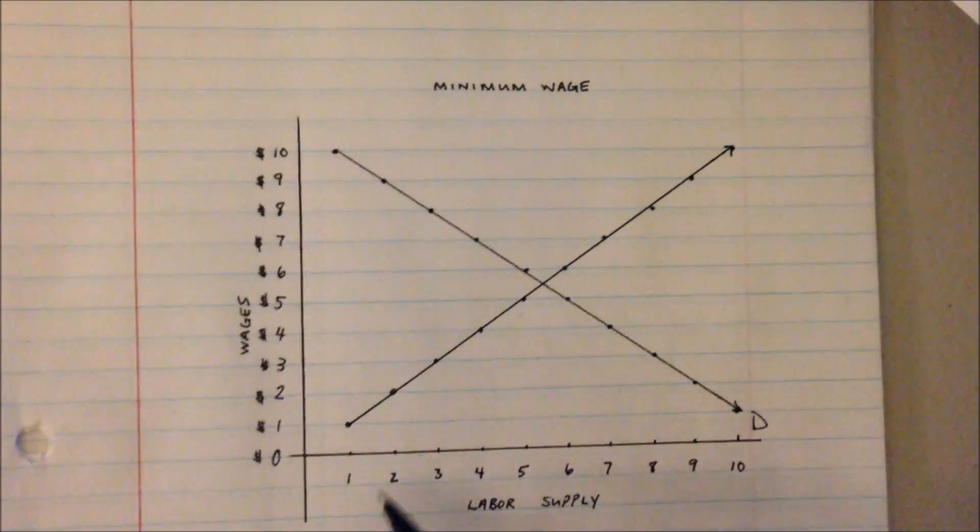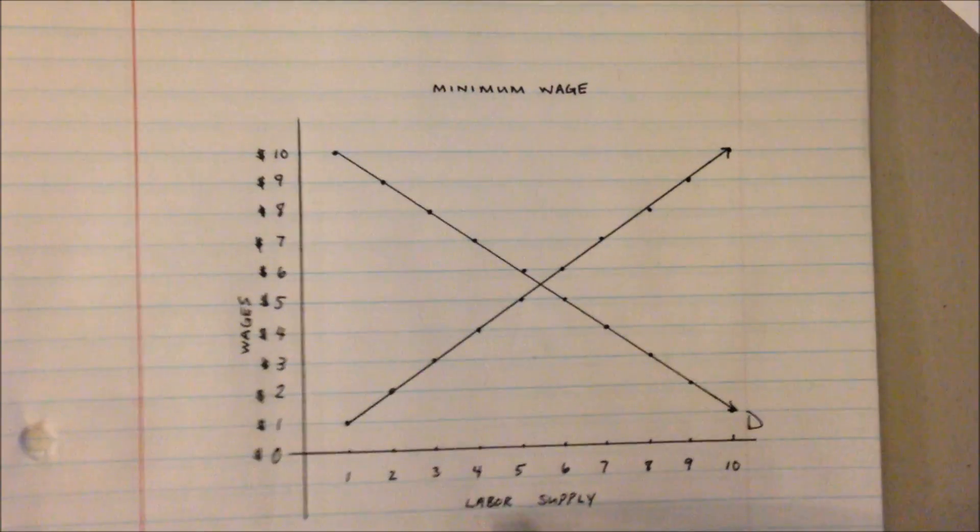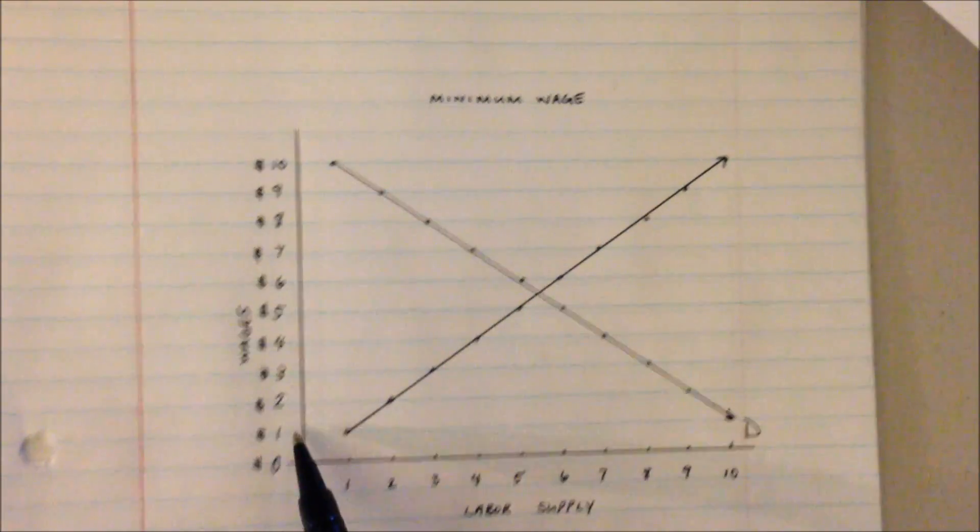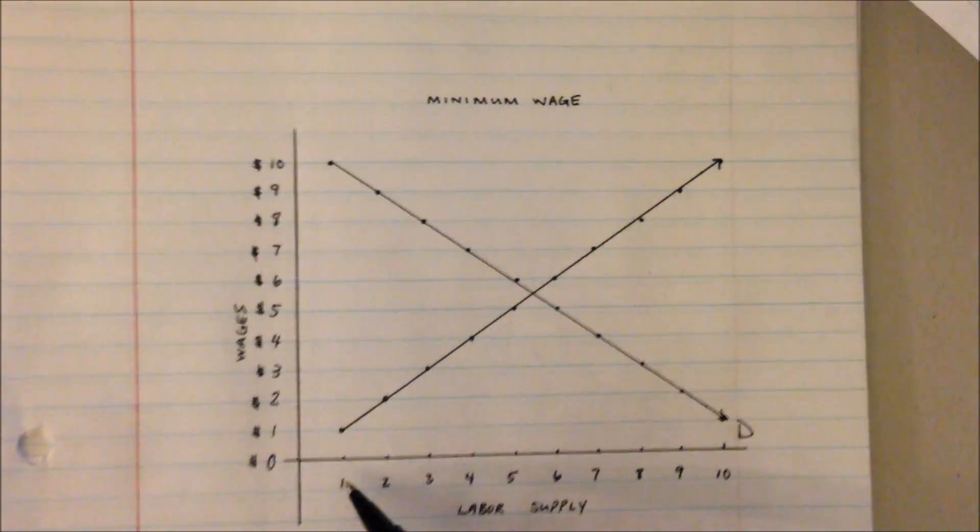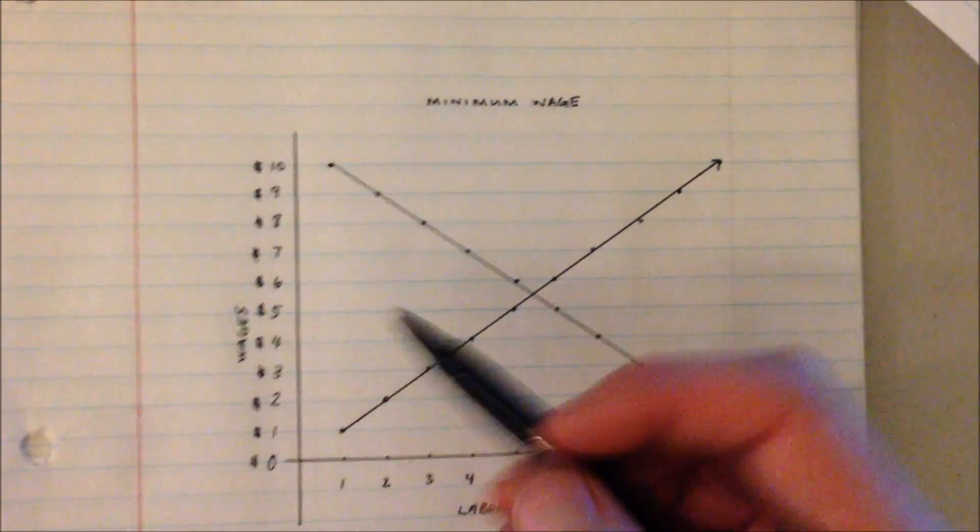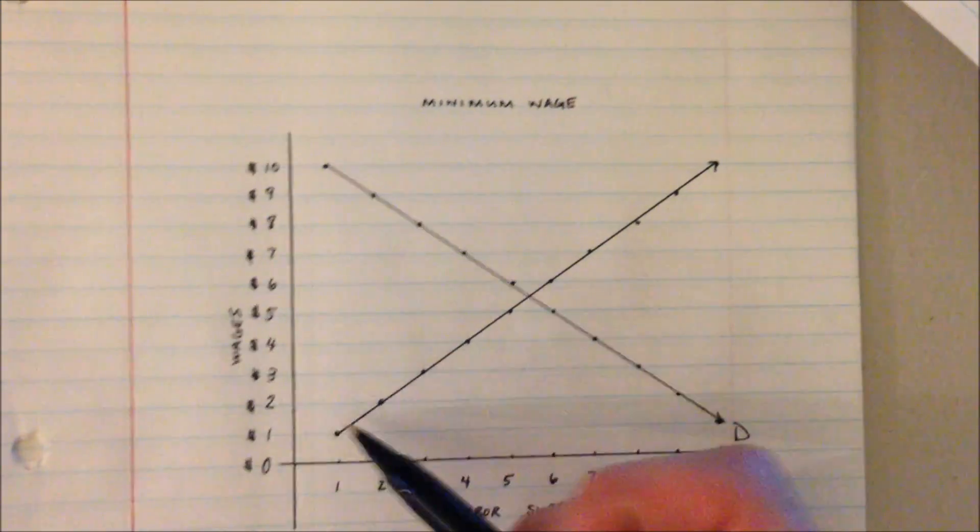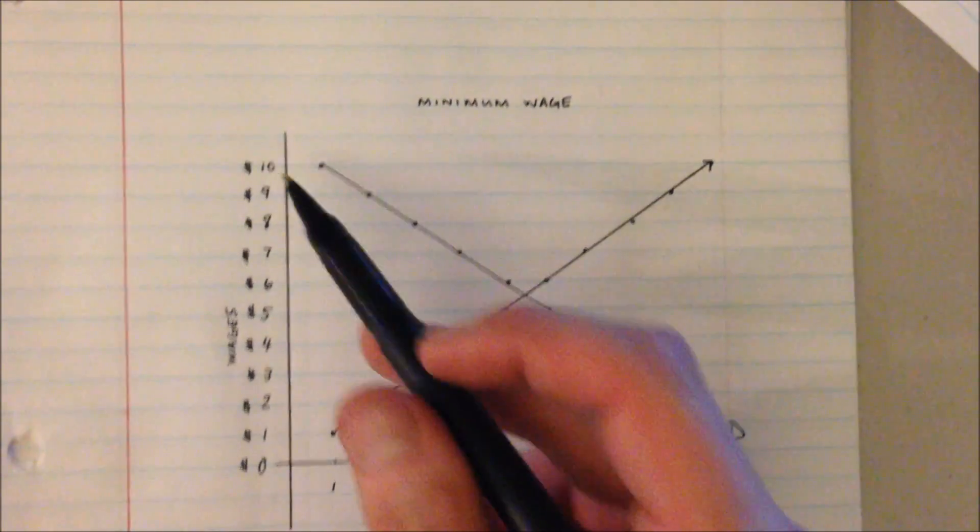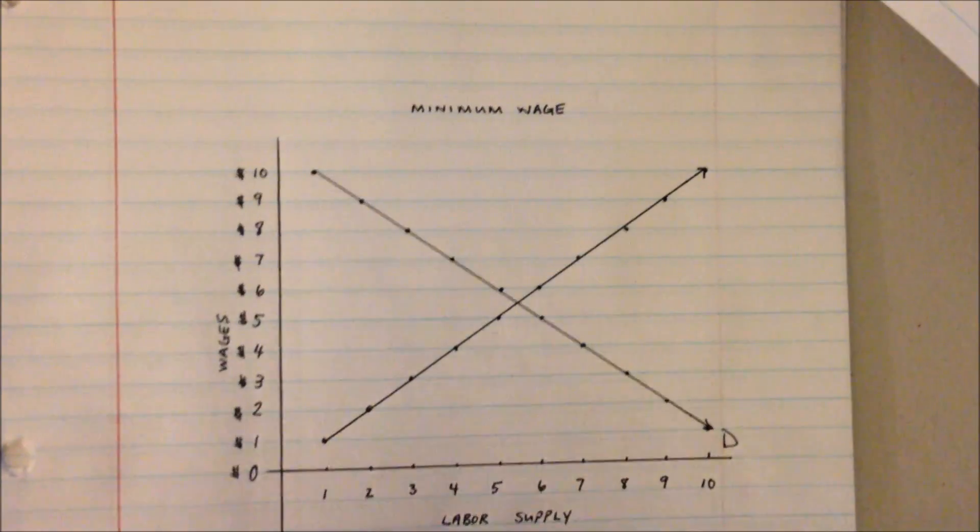The next thing we'll add to our model is the labor supplied at different wages. So when wages are $1 there's only one person willing to work for $1, so there's one person in the labor supply. And then when there's two we have two people willing to work in the labor supply. And then for every $1 increase in wage we'll have one person increase in the labor supply.